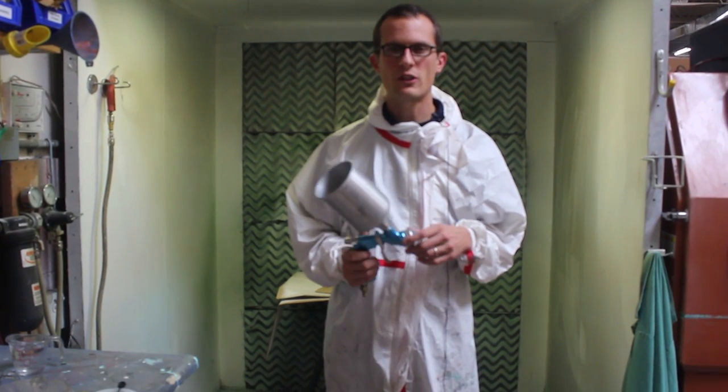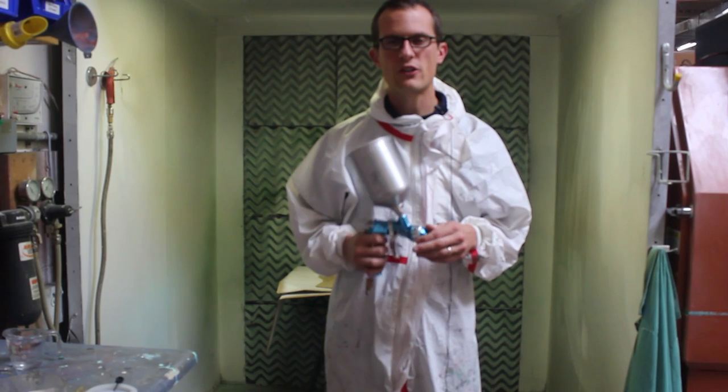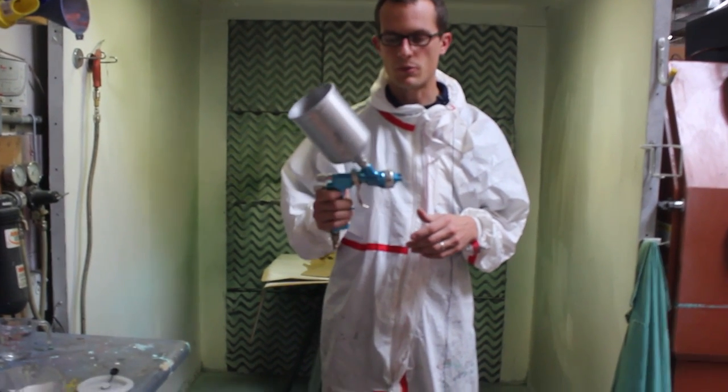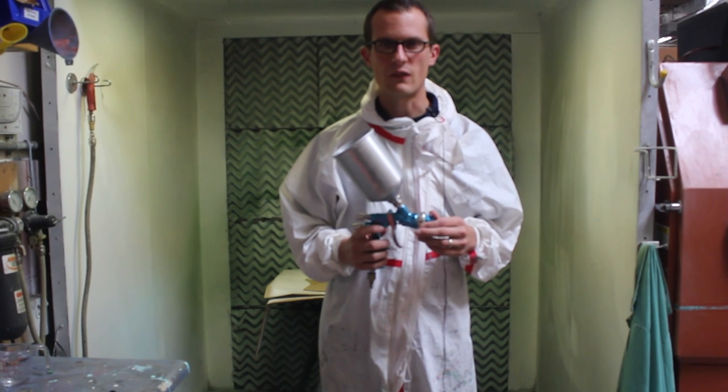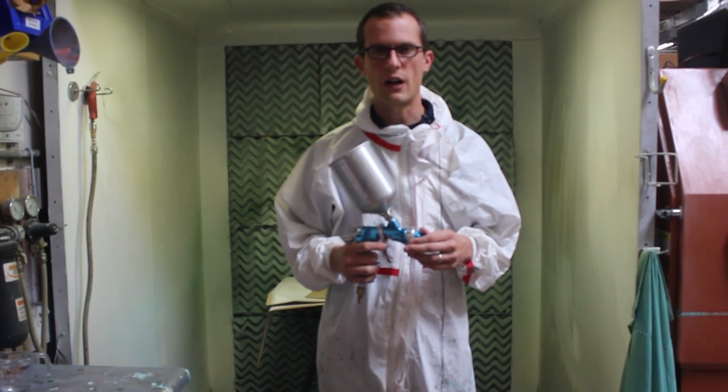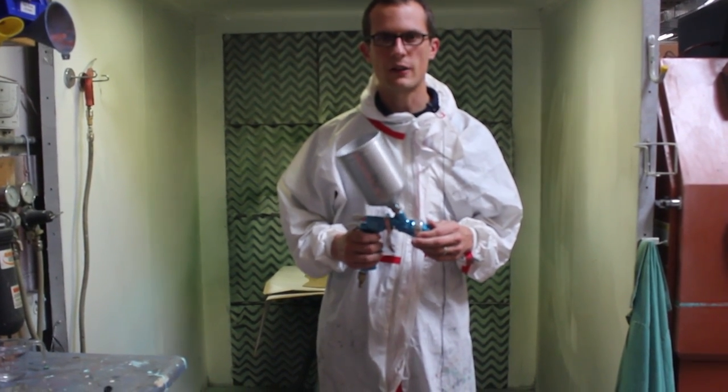A couple things with the spray gun, you want to make sure you choose the right gun. HVLP, conventional, these come in HVLP or if you want a suction gun, you get those in conventional. We'll show you a little bit about how they both spray, and we'll go over how to use them properly so you can get a good finish on your project.